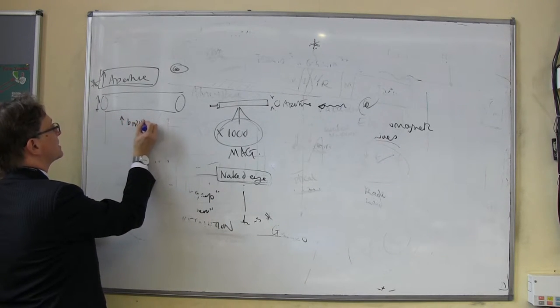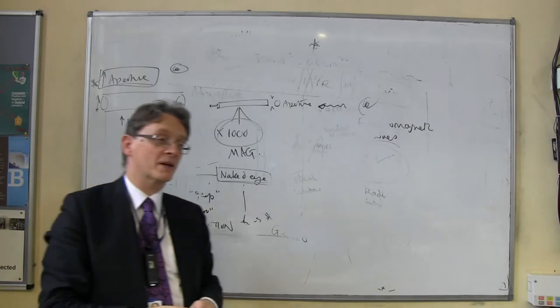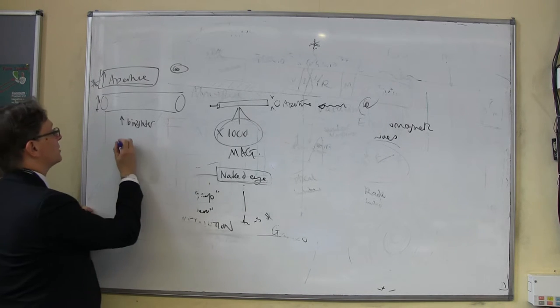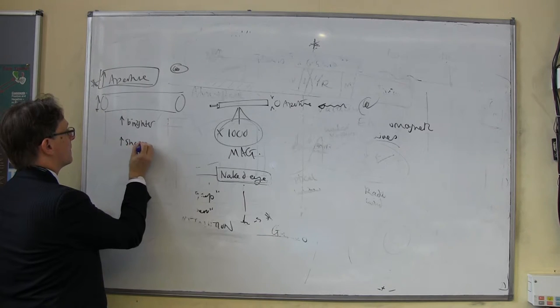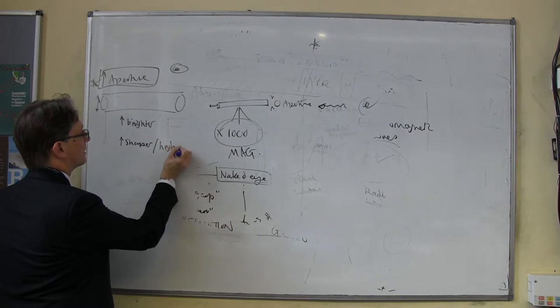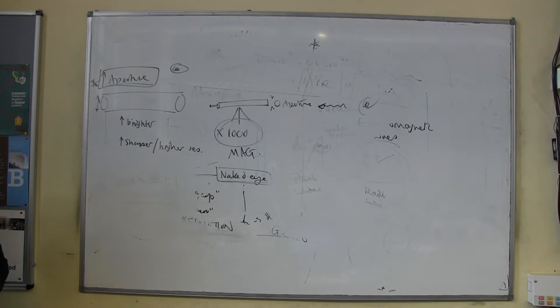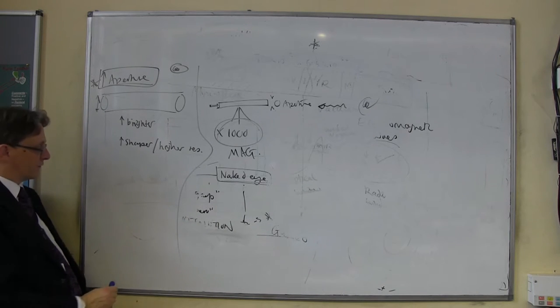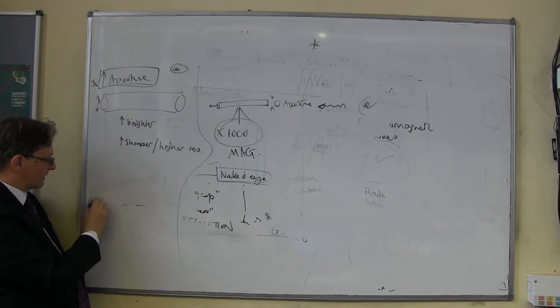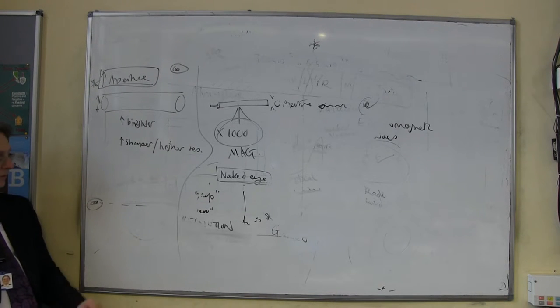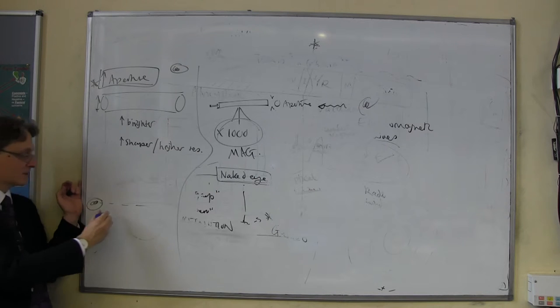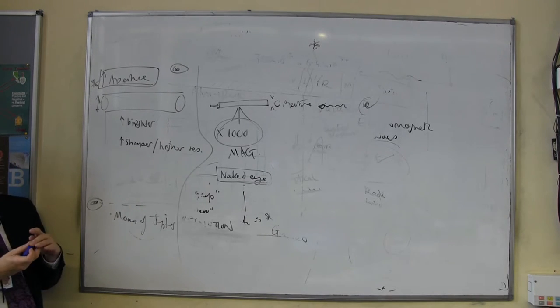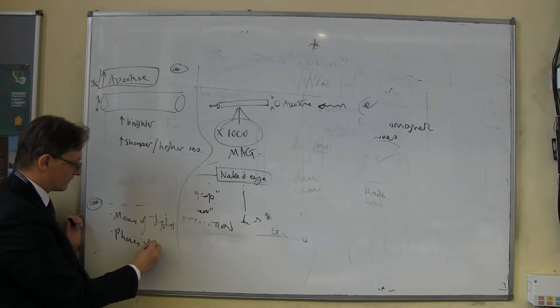If you make the hole at the front bigger, you get more light in. You get a brighter image, and you also get a sharper or higher resolution image. Not by a massive amount, and it's just one of those quirks of fate. I often like to think about, here's the human eye. What things are just beyond the human eye? What things, if the human eye were just a little bit bigger, would you be able to see? Very famously, of course, it is the moons of Jupiter. And the other one is the phases of Venus.